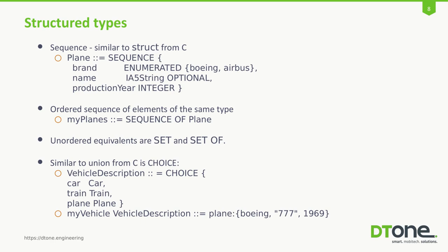The most used type, I would say, is the sequence, which is similar to a struct in C. Here you can see an example of how you can define a structure providing information about a plane. We have defined attributes: brand name and production year, and you can see that I can nest different types into the sequence. You can also nest sequences into sequences.